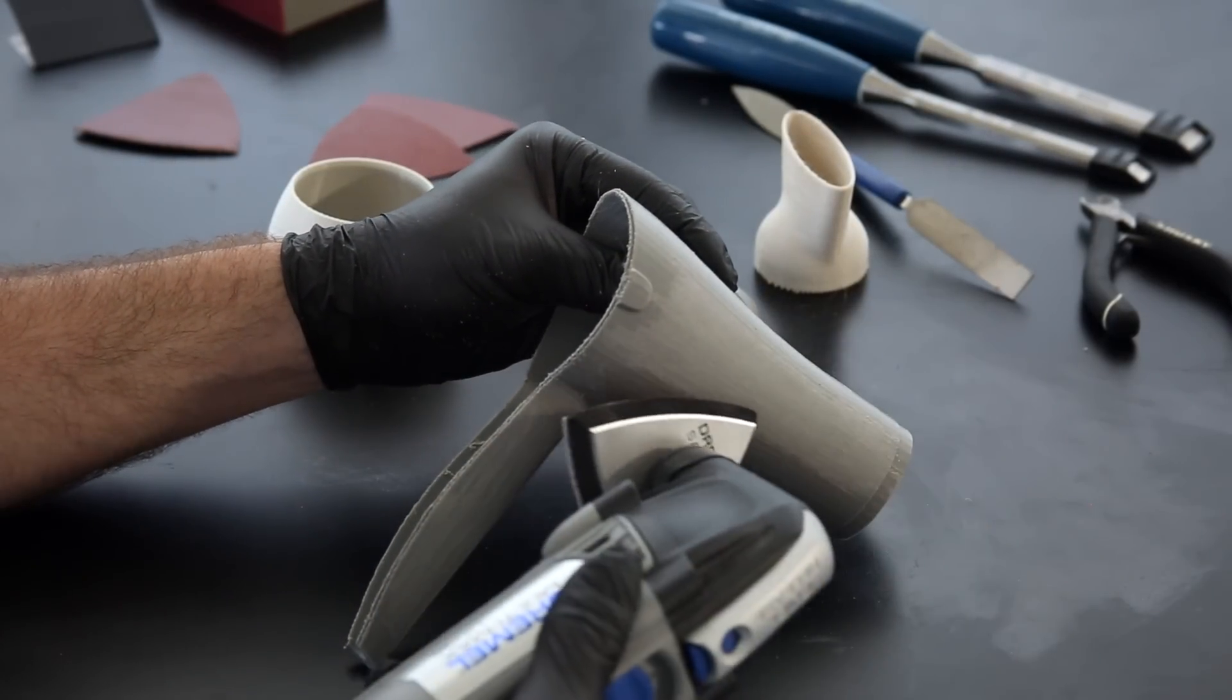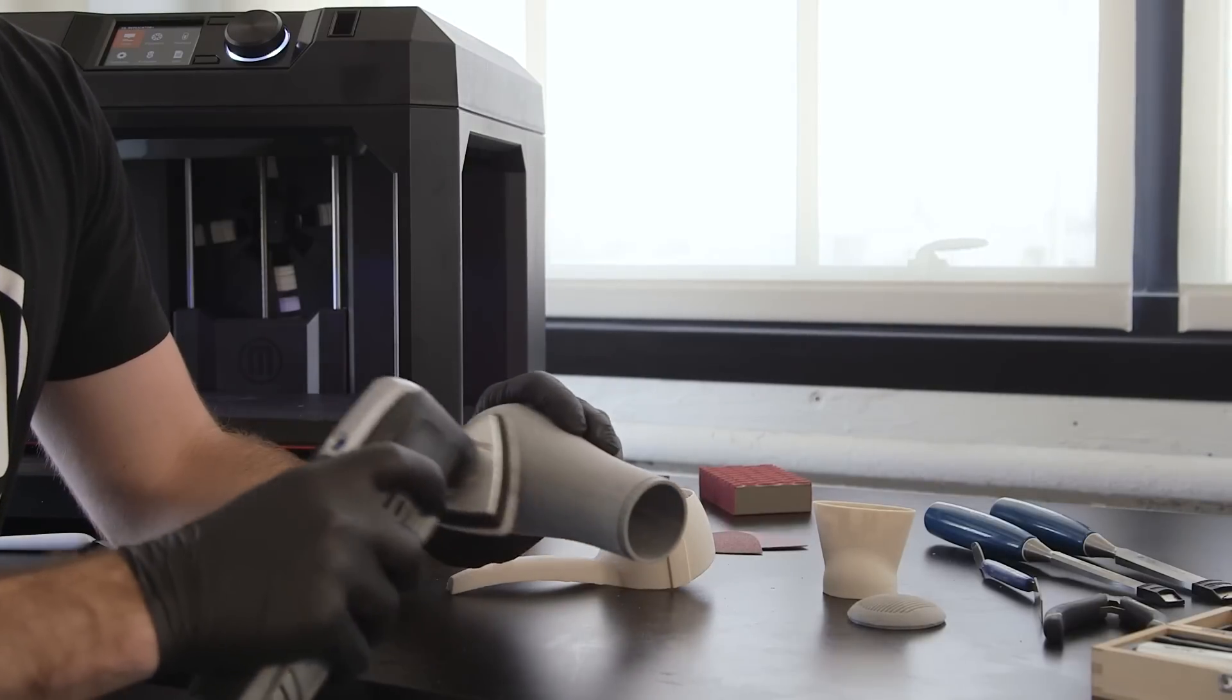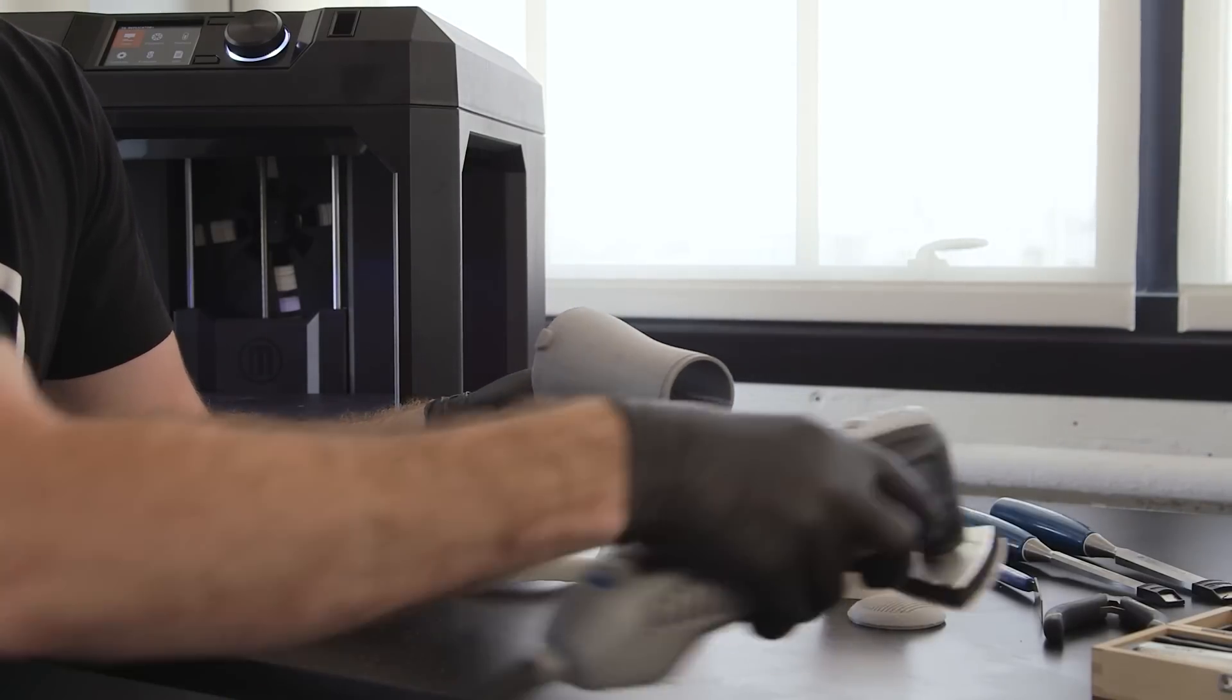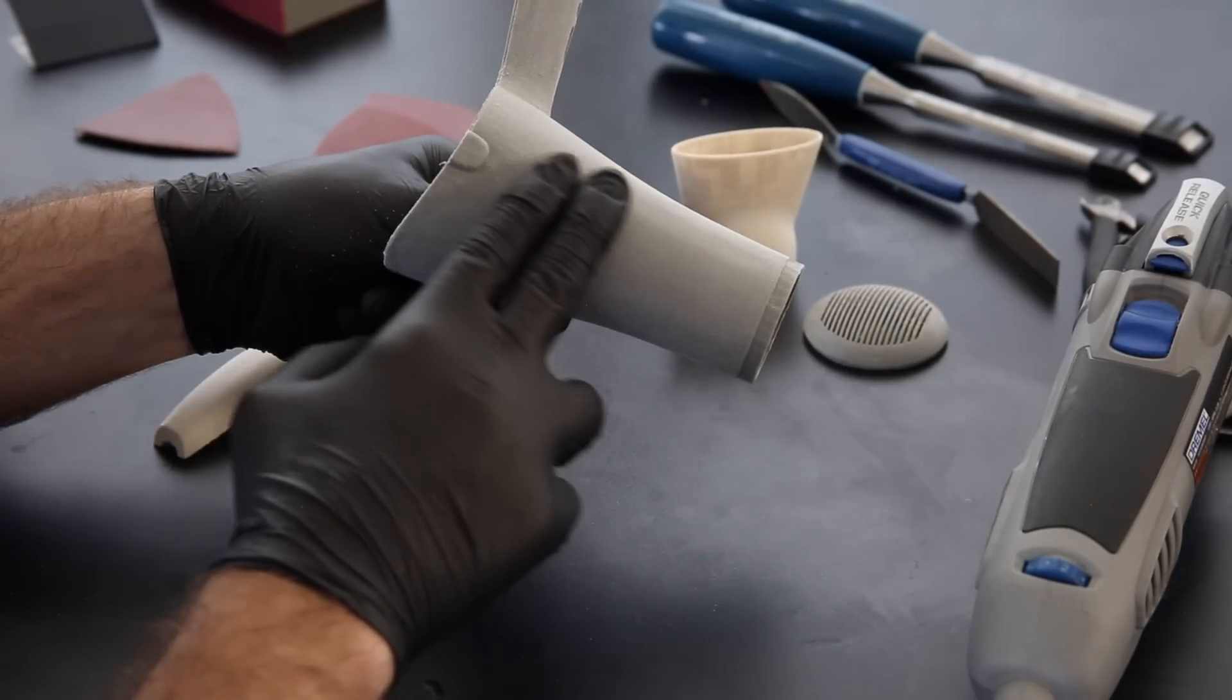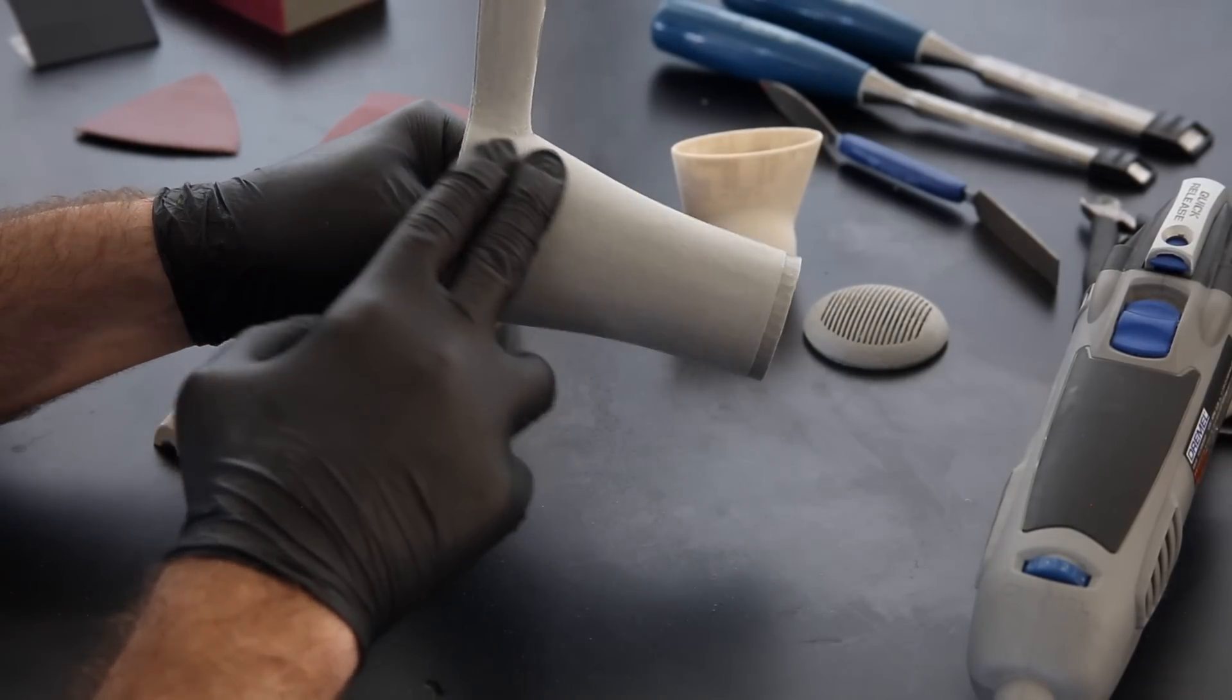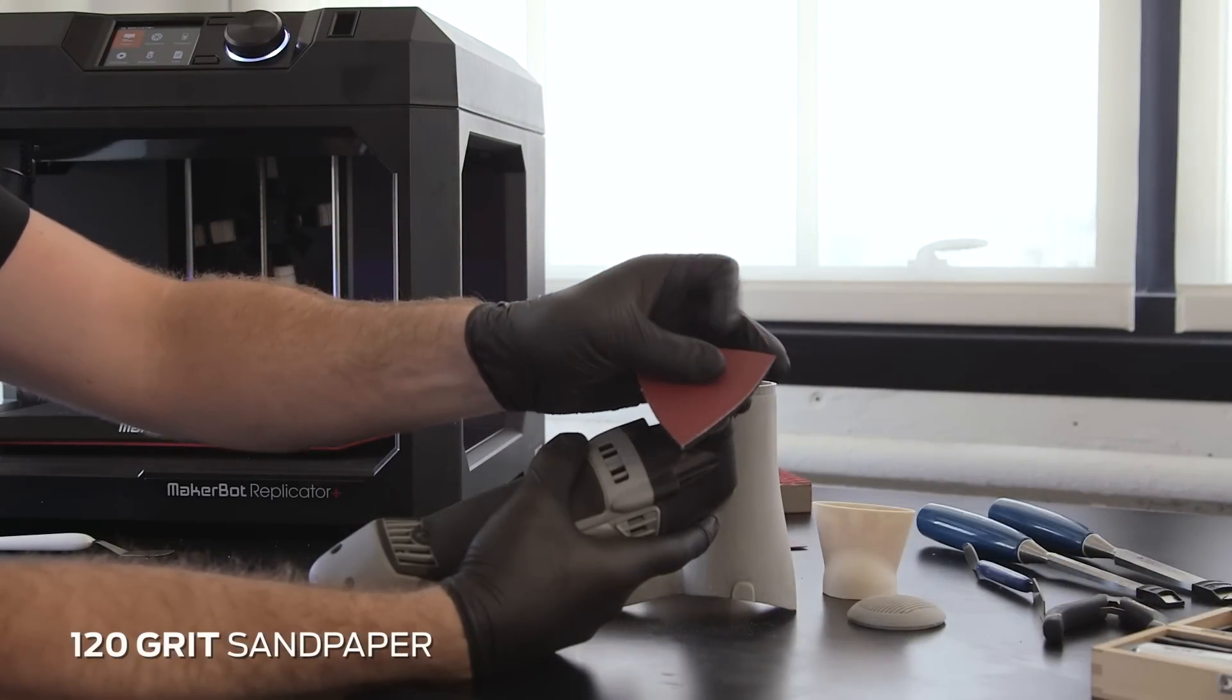Clean and inspect your print under good lighting. If you missed any spots, sand and inspect again. You can move to the next grit when you notice that your model's surface is fairly even and has changed from glossy to matte. When you approach higher polishing grits, the shine will return.